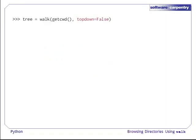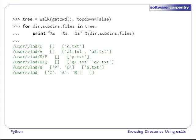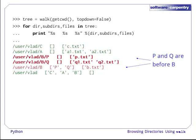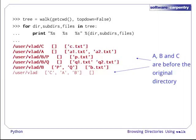Walk supports an optional top-down argument, which, by default, is true. If we set this to false, then tuples from child directories appear before their parents in the list. P and Q's tuples appear before that of their parent, B. And A, B, and C's tuples appear in the list before those of the original directory.